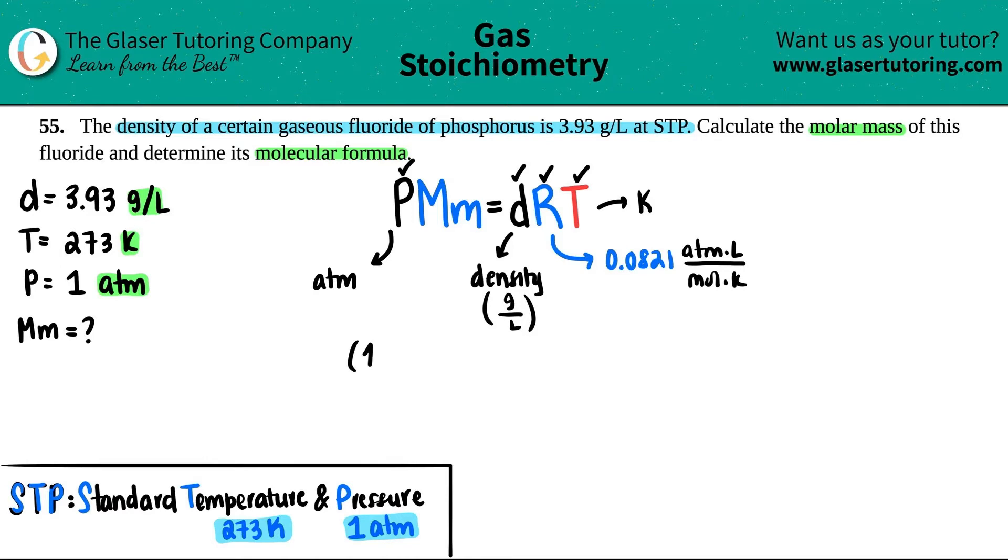So we have this. So let's just plug everything in and solve for the molar mass. So we got 1 times X equals the density, which is 3.93, times the R value, 0.0821, and then times by the temp, which is 273. And essentially, right, we would divide by one, but basically dividing by one is the same. So I can just remove this, right? And X, the molar mass, would just be these three things multiplied by each other.